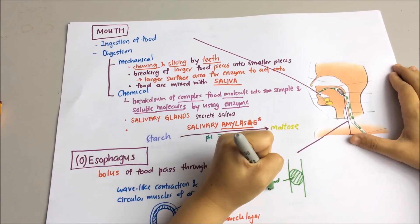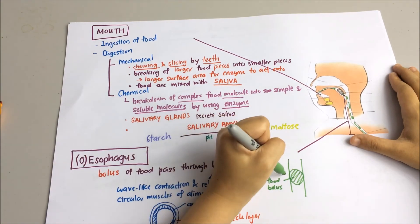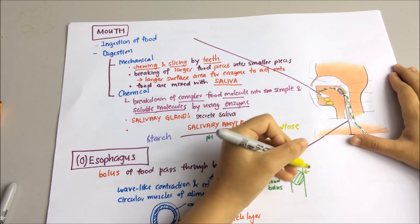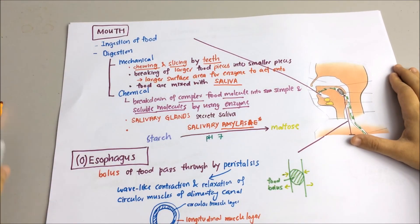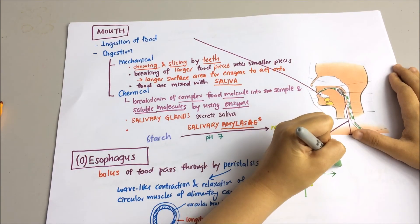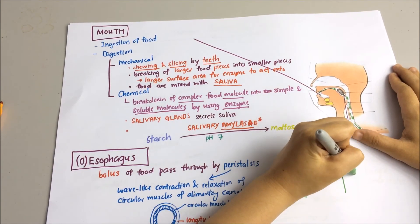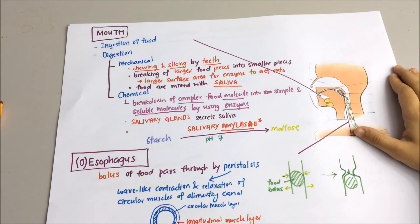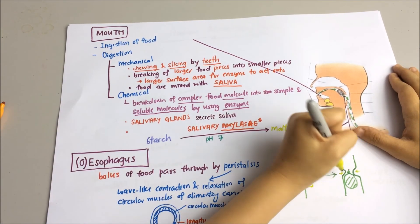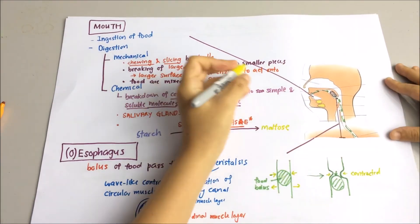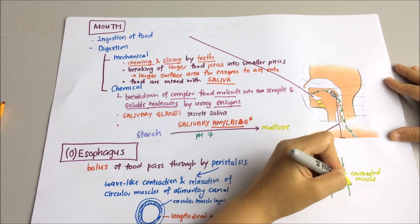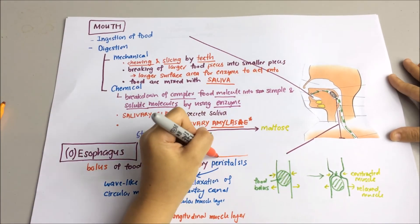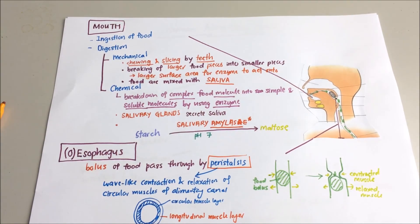Peristalsis basically means the rhythmic muscular contractions within the esophagus, contracting behind the food bolus and relaxing in front of it. So essentially the food kind of makes its way down because it is contracting above it and relaxing below it. The food is actually pushed down by the contraction of the muscle. So remember the keyword here is peristalsis.